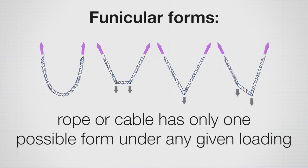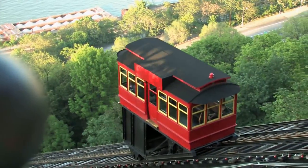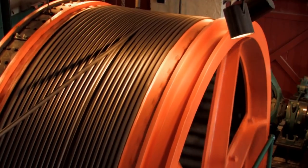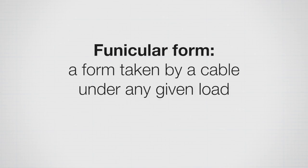It turns out that these forms have another name, and that's called a funicular form. Maybe you've heard of funicular railways. Funicular railway uses a cable to pull the car up and down, so it's also based on cables. And a funicular form as it relates to structures, the definition is it's a form taken by a cable under any given load.